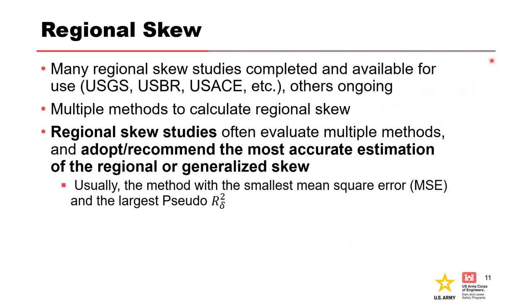There are many regional skew studies available, often completed by USGS, Bureau of Reclamation, the Corps, and others that are ongoing. Multiple different methods can be used to calculate regional skew — many are documented in Bulletin 17B and discussed in Bulletin 17C as well. Regional skew studies often evaluate multiple methods and adopt the most accurate estimation. They look at lots of different methods and usually select the one with the smallest mean square error (MSE) and the largest pseudo R-squared. Pseudo R-squared is a goodness-of-fit measure for the estimated regional skew compared to the data.